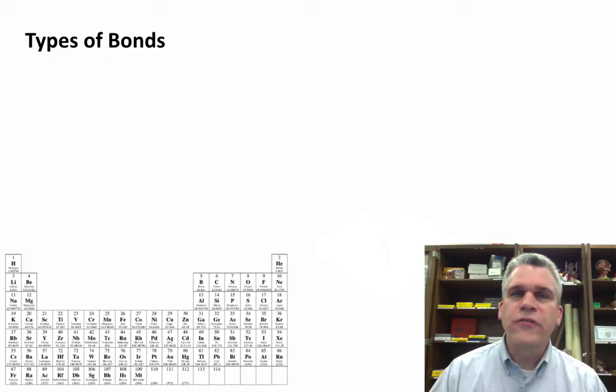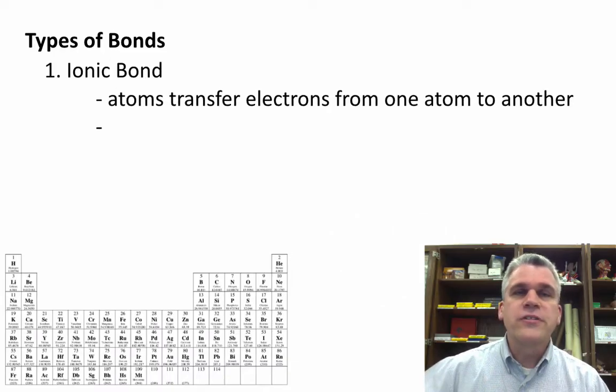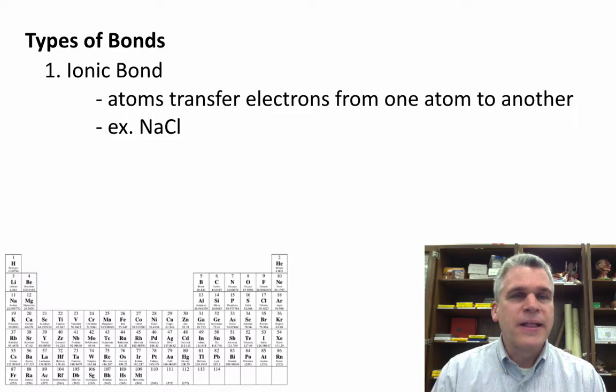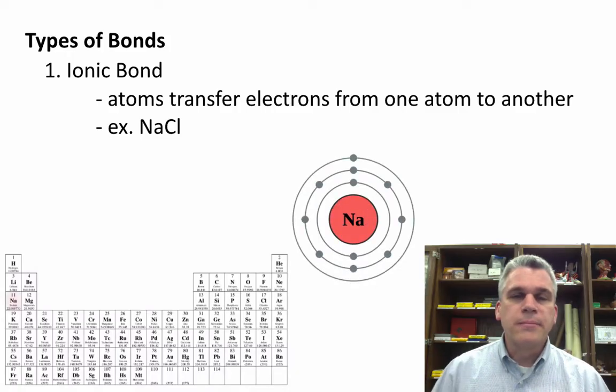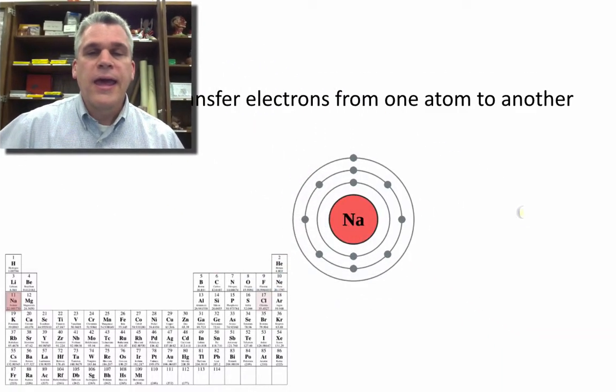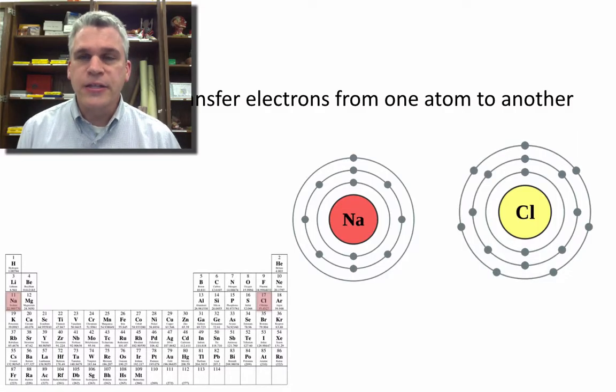We're going to look at two different types of bonds in this video. The first type is called an ionic bond. In an ionic bond, atoms will transfer electrons from one atom to another. Let me give you an example of this. Let's take a look at sodium chloride. Sodium, which is an alkali Earth metal, and chlorine, which is a halogen.